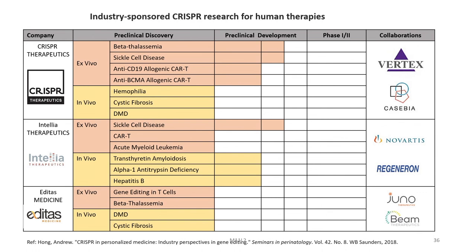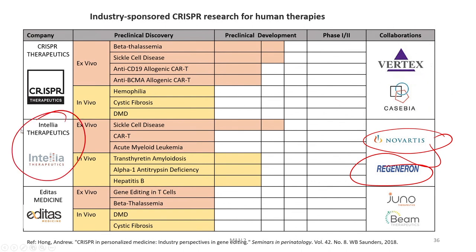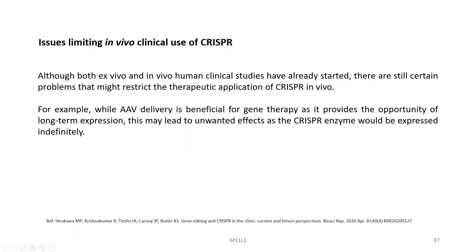Industry-sponsored CRISPR research for human therapies includes companies such as CRISPR Therapeutics, Intellia Therapeutics, and Editas Medicine. Preclinical discoveries and disease targets include beta thalassemia, sickle cell disease, anti-CD19 allogenic CAR-T cells, hemophilia, DMD, acute myeloid leukemia, and hepatitis B. Collaborative partners include Vertex and Casabia with CRISPR Therapeutics, Novartis and Regeneron with Intellia Therapeutics, and Juno Therapeutics and BMS with Editas Medicine.